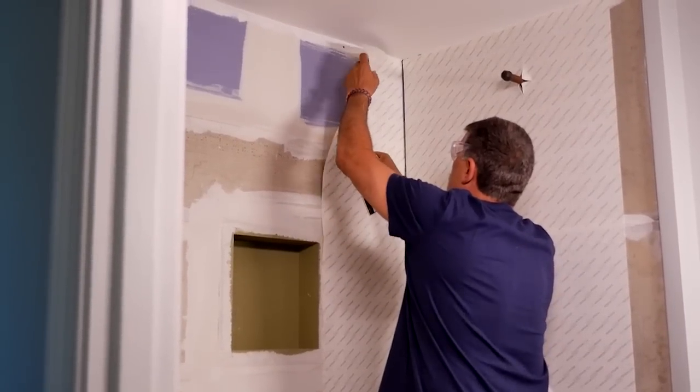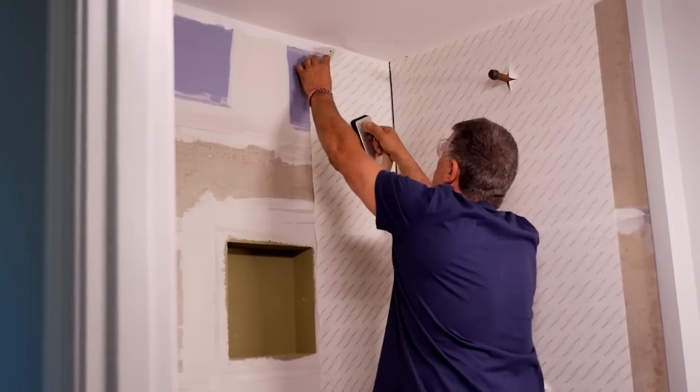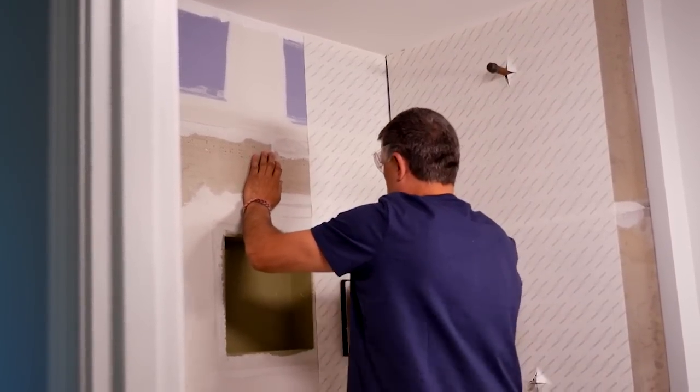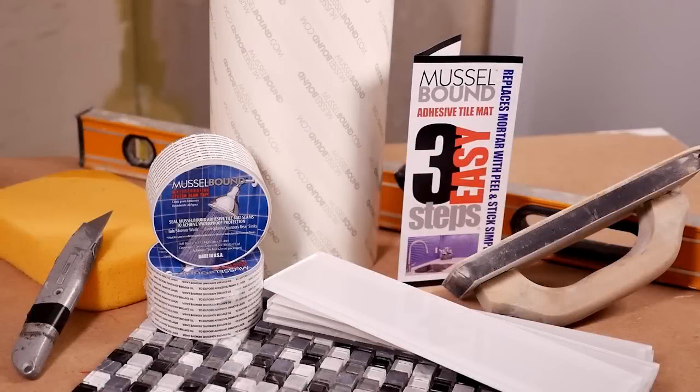When you use Innovative Musclebound, your waterproofing layer is also your adhesive for installing grouted glass, stone, porcelain, ceramic, or metal tiles, as well as mesh-backed mosaics.